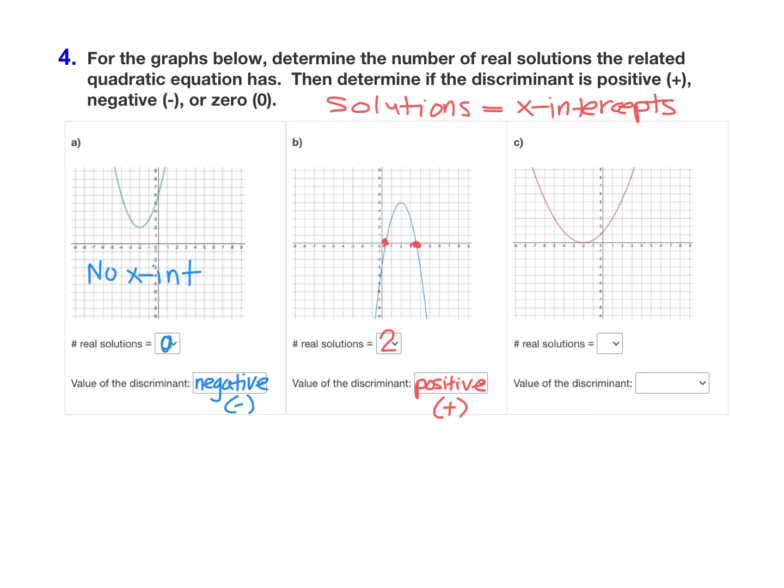Our final graph here crosses the x-axis at just one spot right here. So if it has one x-intercept, it means there's one real solution. And anytime there's just one real solution, we know that the value of the discriminant must be zero.